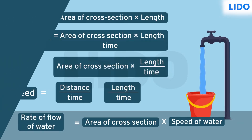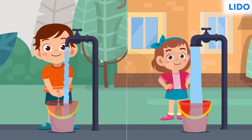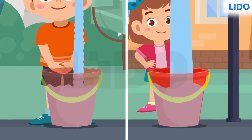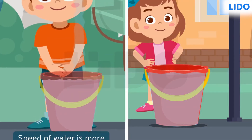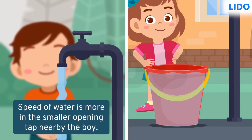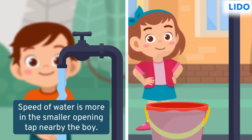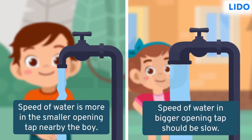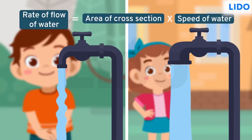Now let's see if Irene and Sam fill the bucket or not. Hey, that's surprising — both the buckets get filled at the same time! This is because though the tap had a smaller opening, the speed of water was higher in Sam's case. And in Irene's case, though the tap had a bigger opening, water was flowing slowly. As we know, rate of flow is cross-sectional area times speed.